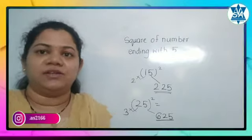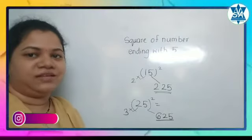Isn't it easy to calculate the square of a number ending with 5? Thank you so much, bye!